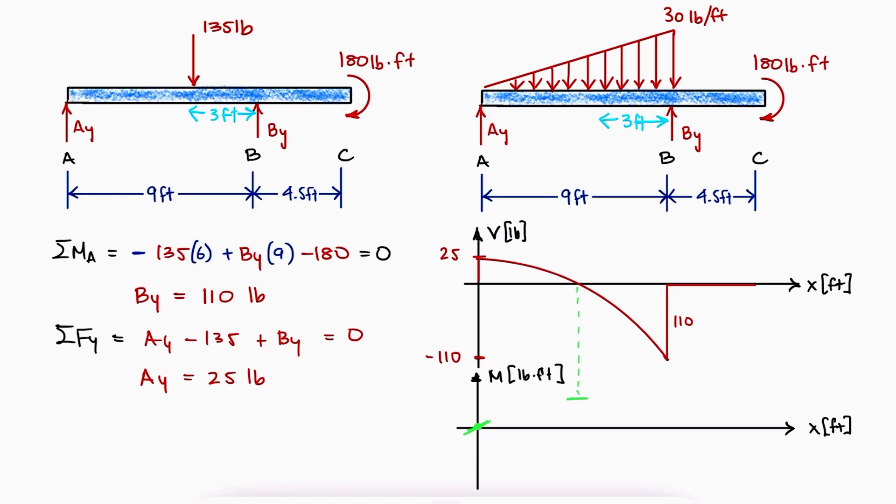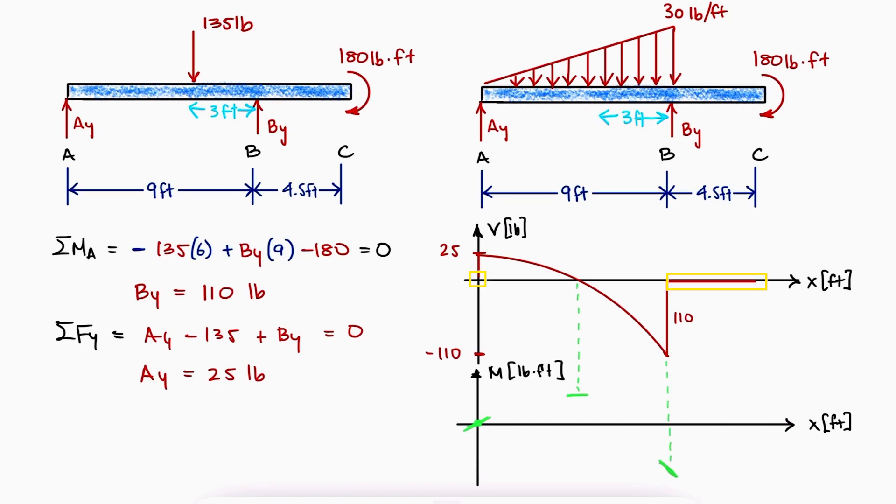and quickly become minus 110 from A to B. At B, the slope becomes 0 and maintains that value till C. Connecting the slopes, we find the overall geometry of the bending moment diagram.